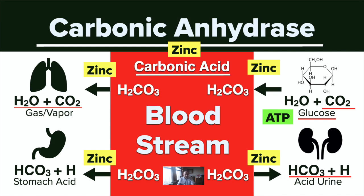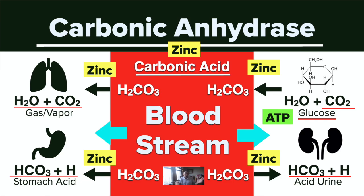When carbonic acid goes to the stomach, the carbonic anhydrase enzyme will disassociate it into a bicarbonate and a hydrogen ion — and this is what makes your stomach acid. It's an amazing biochemical process. Remember: the reaction can go both ways, producing either CO2 and water, or bicarbonate and a hydrogen ion.